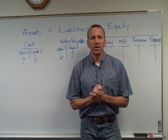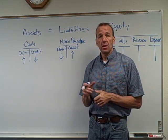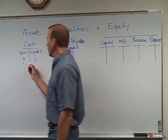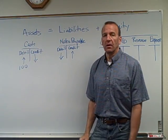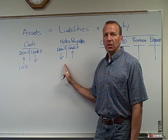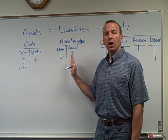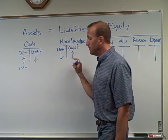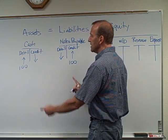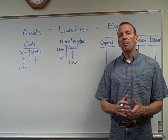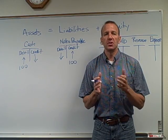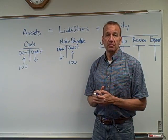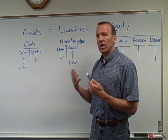Let's look at a quick example: say we borrow $100 from the bank. Cash goes up because we're receiving $100, so we put a $100 debit in the cash account. We also have a loan — we owe money back, which is the definition of a liability — so we increase our liability with a $100 credit. Every transaction your debits must equal your credits. Here we have a $100 debit and a $100 credit, so we're in balance.